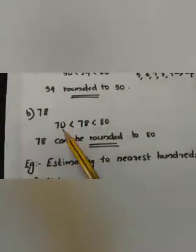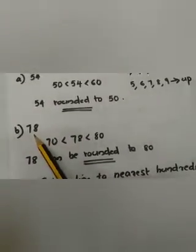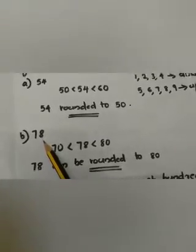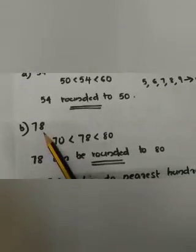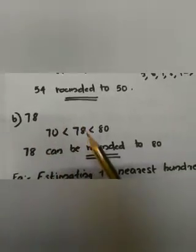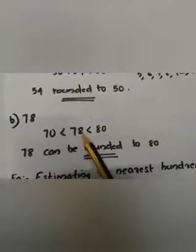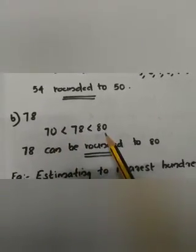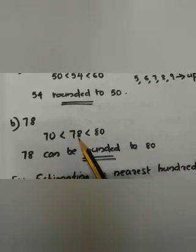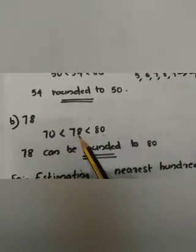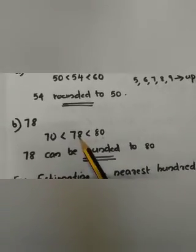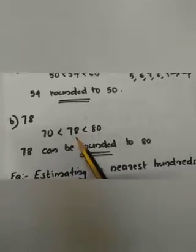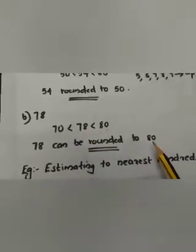One more example: 78. First, we will check between which two tens 78 lies. So 78 lies between 70 and 80. Here in the ones digit, it is 8. So when 8 comes, we are rounding up. So 78 can be rounded to 80.